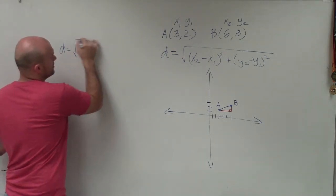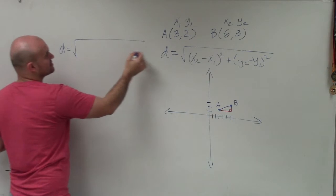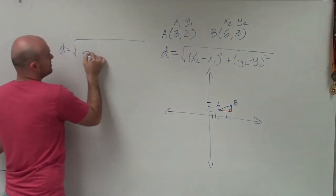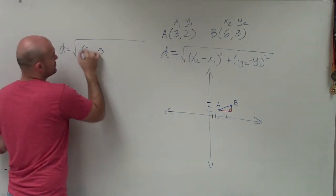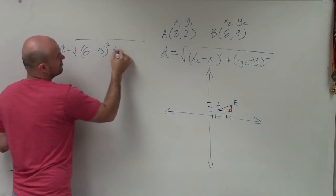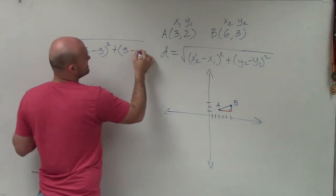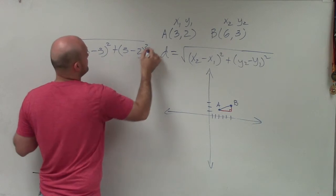So I'll say d equals the square root, and I'll plug in x2, I said was 6. So it's 6 minus x1, which is 3 squared, plus y2, which is 3 minus 2 squared.